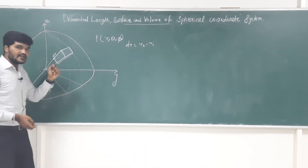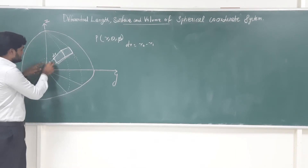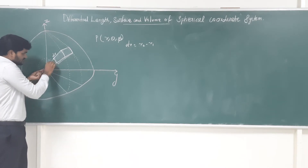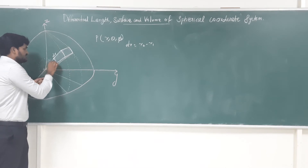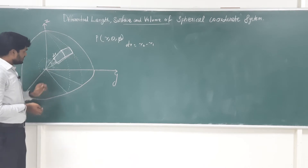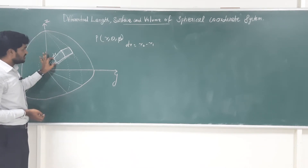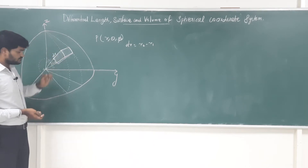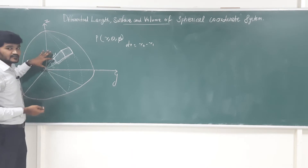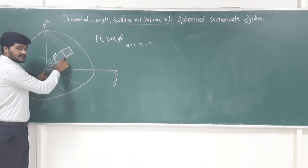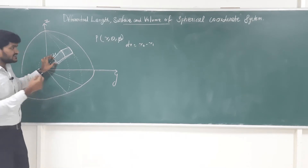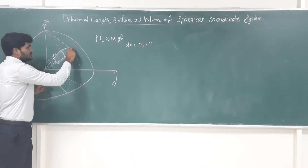Next is dθ. It is an angle made by the z-axis and the radius of the sphere. This arc is dθ, and this arc is also dθ, but this arc is much smaller than this arc. The difference depends on the radius of the sphere — the inner sphere radius is smaller and the outer sphere radius is bigger, so their arc lengths vary. Therefore, we need to additionally multiply the radius, and this arc is denoted as r·dθ.